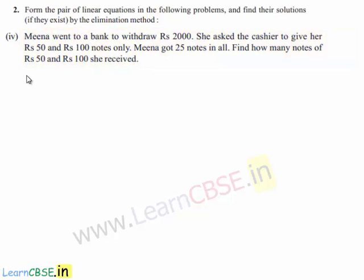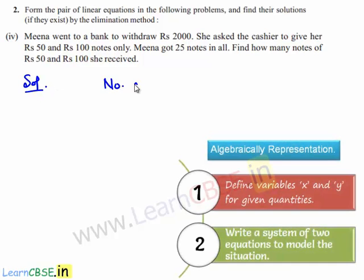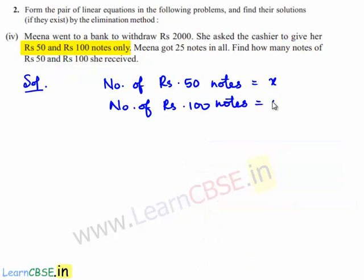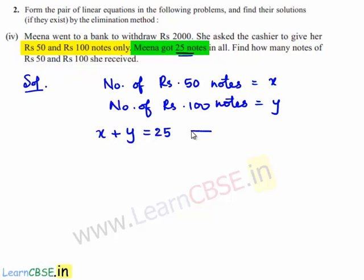Let us see the solution. Assume the number of Rs. 50 notes is equal to x and the number of Rs. 100 notes is equal to y. According to the given problem, the total number of notes is equal to 25, that is x plus y is equal to 25. Name this as equation number 1.